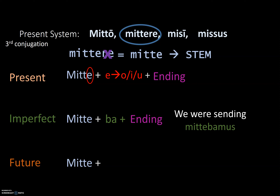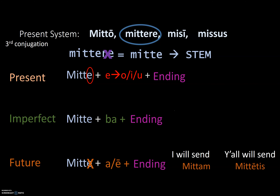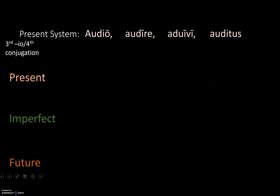For the future in third, third-IO, and fourth conjugations, instead of adding BO/BI/BU, we do a vowel change: the final E shifts to A or a long E, then we add our endings. So 'I will send' is MITTAM with an A, and 'y'all will send' is MITTATIS. The mnemonic is: BO-BI-BU in one and two, A and E in four and three.